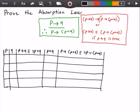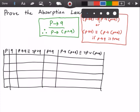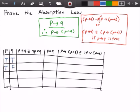Now let's add in our true and false values. I'm going to use T for true and F for false. So P can be true and Q can be true. P can be true and Q can be false. P can be false and Q can be true. And then P can be false and Q can be false.